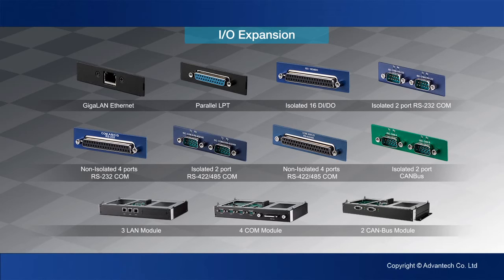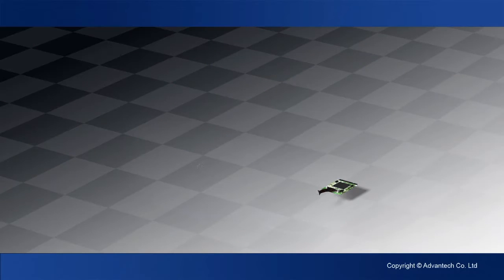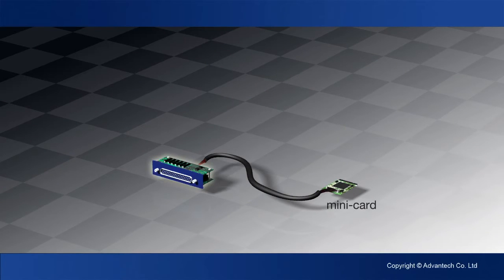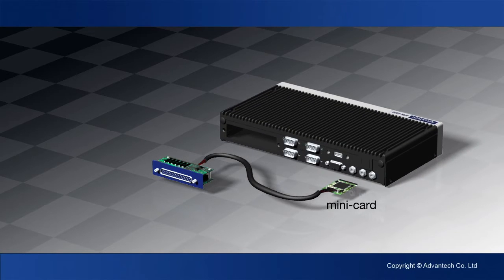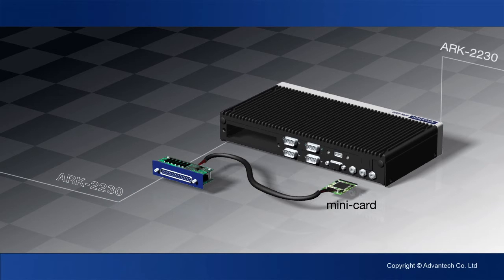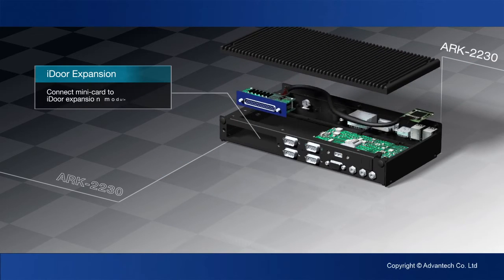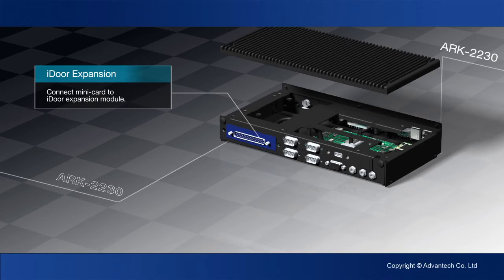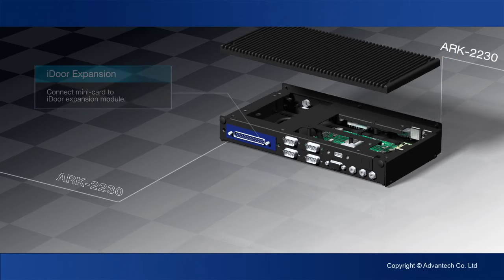Let's see how this modular system works. For the standard system offering, the system provides one IDOR expansion slot for optional I/O modules. The I/O modules support different functions via USB or PCIe from the mini PCIe slot. Installation is easy — just install the module in the mini PCIe slot and attach the IDOR I/O panel. Your customized system is ready to use.